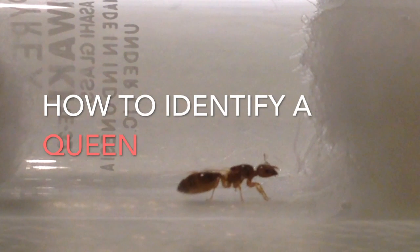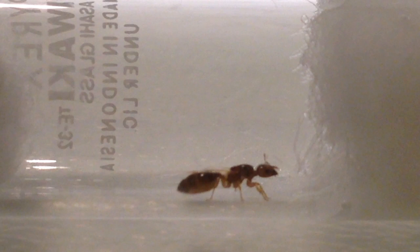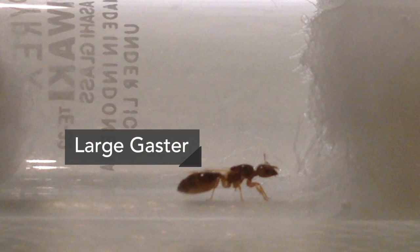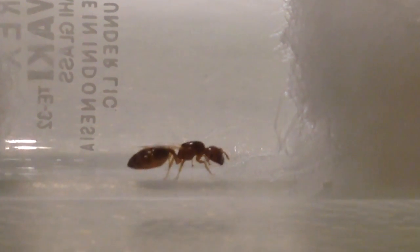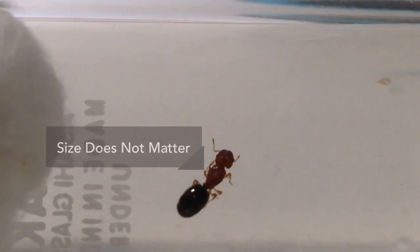Okay, so now that you guys have caught your queen, now we have to identify if the ant that you caught is really a queen. So what you guys are going to want to look for is large gasters and large thoraxes. Usually they have quite large thoraxes because they have their wing scars there and size does not matter.